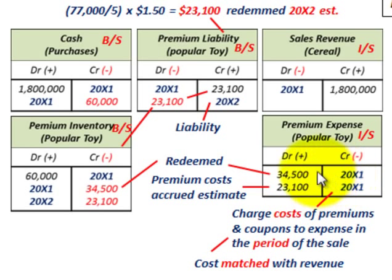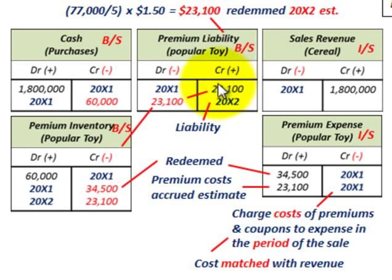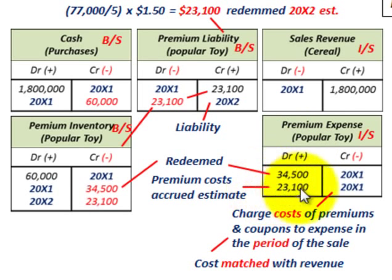Because not all toys were redeemed in the first year, we set up a premium liability account on the balance sheet for the estimated twenty three thousand one hundred dollars. We credit premium liability twenty three thousand one hundred dollars on the balance sheet, corresponding to the debit of twenty three thousand one hundred dollars on the income statement for premium expense.